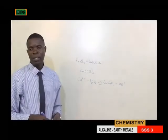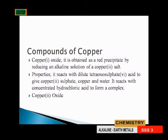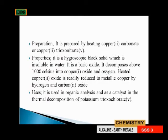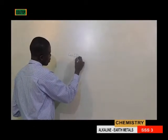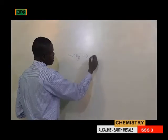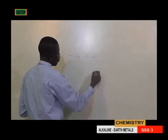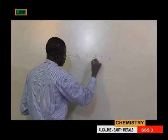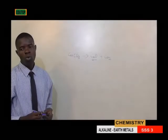Copper(II) ions react with dilute tetraoxosulfate(VI) acid to give copper(II) tetraoxosulfate(VI) salt, and that is one of the chemical properties. It reacts with concentrated hydrochloric acid to form a complex copper(II) oxide. Preparation: it is prepared by heating copper(II) carbonate. When it is heated it gives copper(II) oxide plus CO2, and this is our compound of interest, copper(II) oxide.